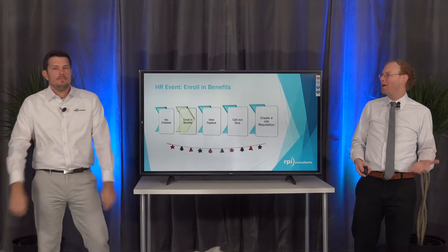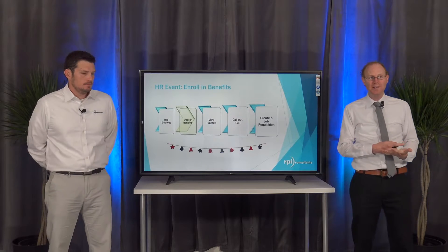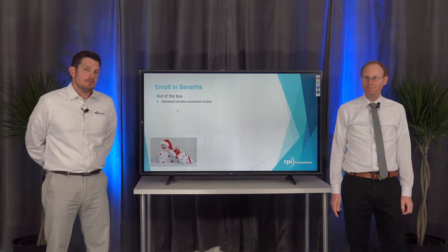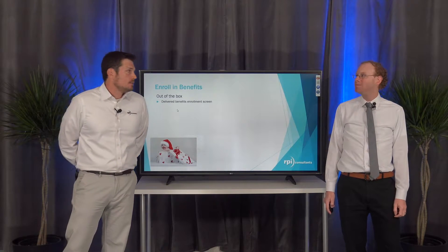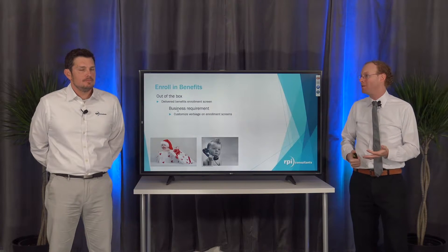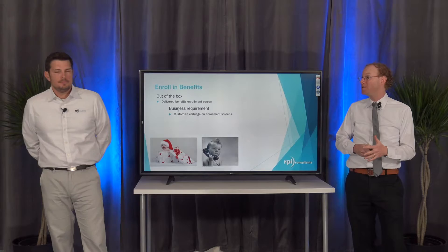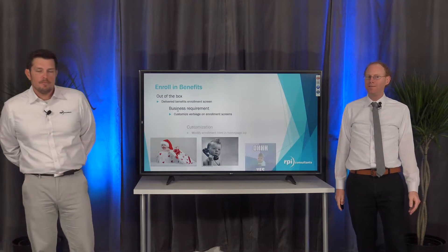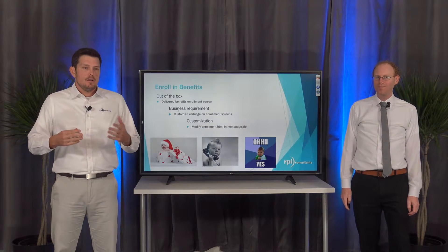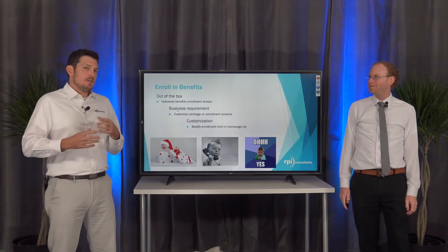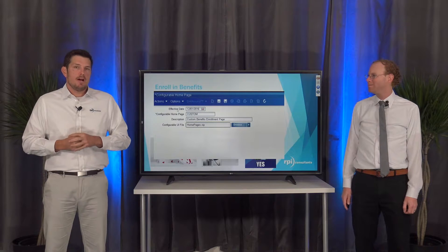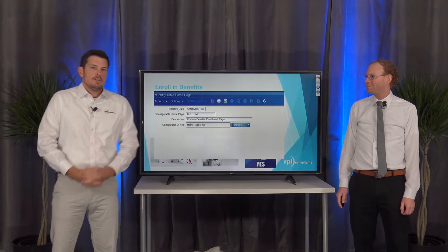Now that our employee has been hired into our organization, the next thing they need to do is enroll in benefits. Out of the box, Infor delivers a pretty standard benefits enrollment screen — not unlike ESS, but in Landmark. Wouldn't it be great if we could add some specific instructions onto the benefits enrollment screens to help our employees make sense of their choices? Infor has given the ability to make changes to some of the web-enabled code. They've given you zip files where all of those HTML files live, and you make your changes to that zip file, then there's a process for uploading it to Landmark so you can see the changes.